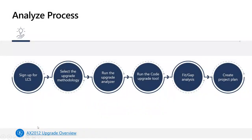Starting with the Analyze phase, there are certain sub-activities. The first thing is you need to get access to LCS — there are different ways to do that. Once you have access to Lifecycle Services, you will need to create an upgrade project by selecting the upgrade methodology so that you can access the resources we are sharing and drive a successful upgrade.